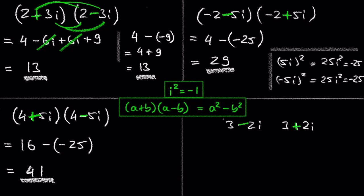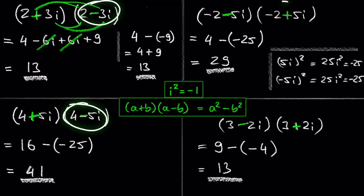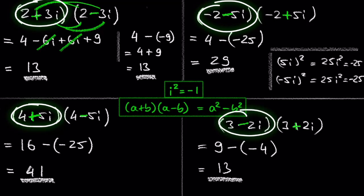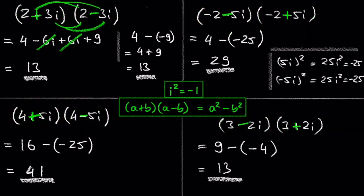Let's look at the last example. 3 squared is 9, negative 2i squared is negative 4, and 9 minus negative 4 is 13. With these examples, we learned what a complex conjugate is and that when multiplying a complex number by its conjugate, the result will be a real number.